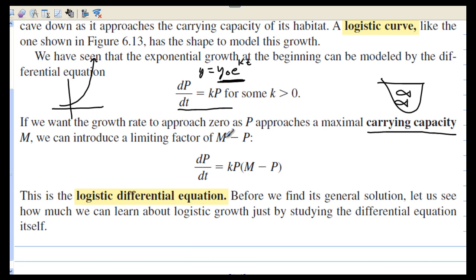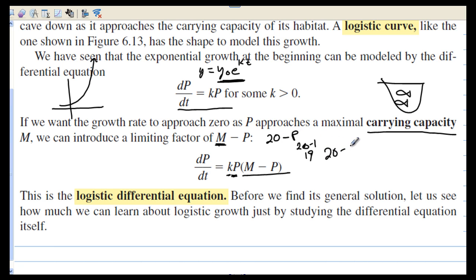We can introduce a limiting factor of M minus P, where M is the carrying capacity. If our bowl can carry 20 fish and the population is 1, we have 20 minus 1, so 19 is a factor of the growth. As the population grows to 15, that factor is only 5 and growth slows. When it reaches 20, the growth rate has a factor of 0 — it's not growing anymore. Zero times anything is zero, and that's what we want: growth equals zero when the habitat has reached its maximum capacity.